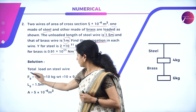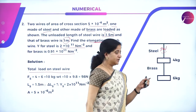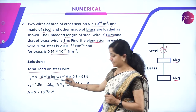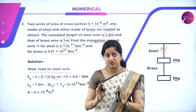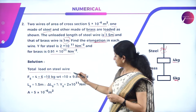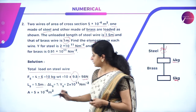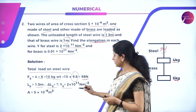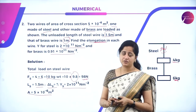Let us write the data. From the diagram, the total load on the steel wire is 4 kg + 6 kg = 10 kg weight. However, the unit for force is Newton, not kg weight, so we convert: 10 × 9.8 = 98 Newton. The length of the steel wire is 1.5 meter. Young's modulus of steel is 2×10¹¹ N/m². Area of cross-section is 5×10⁻⁶ m², which is the same for both wires.